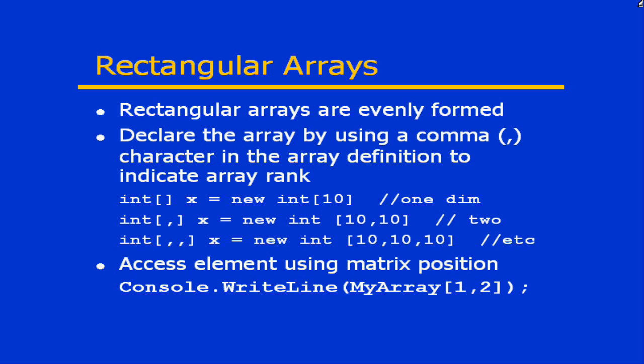To declare a rectangular array, we use a comma character to identify the array rank. Rank means the number of dimensions that the array contains. So a single-dimension array is the simplest rectangular array — it's just one dimension, a single list of values.